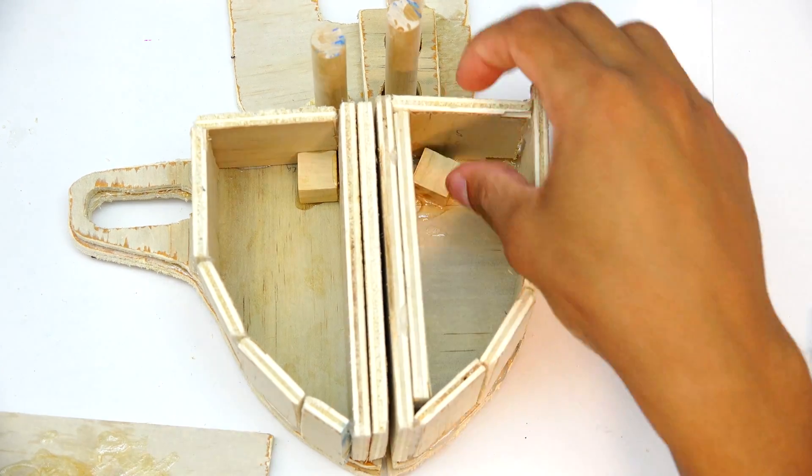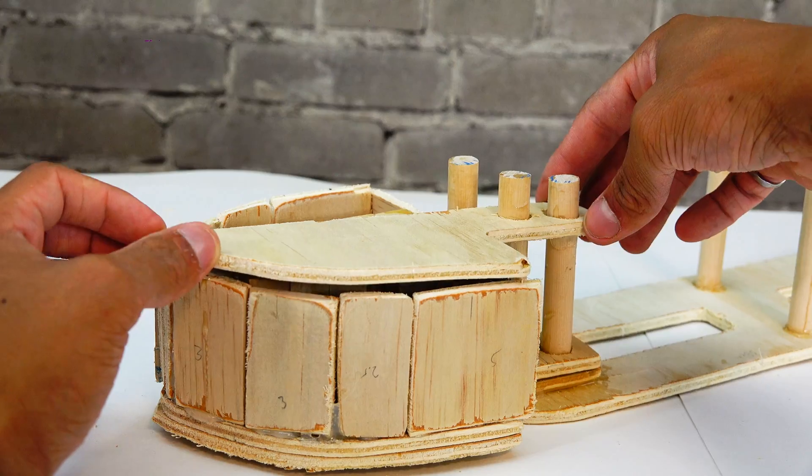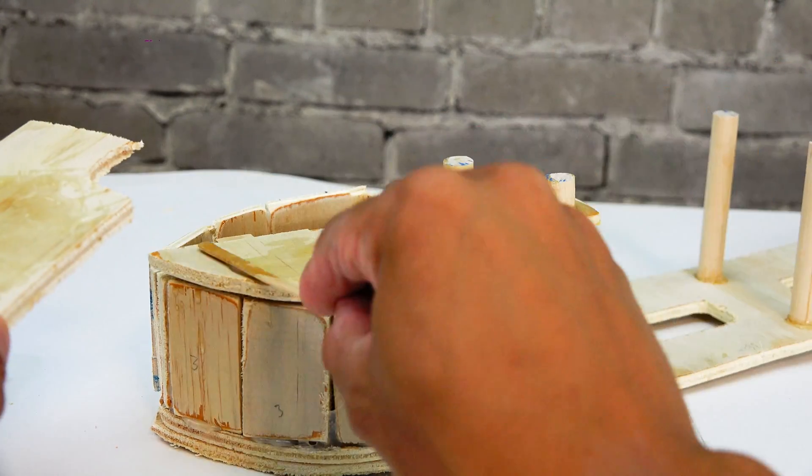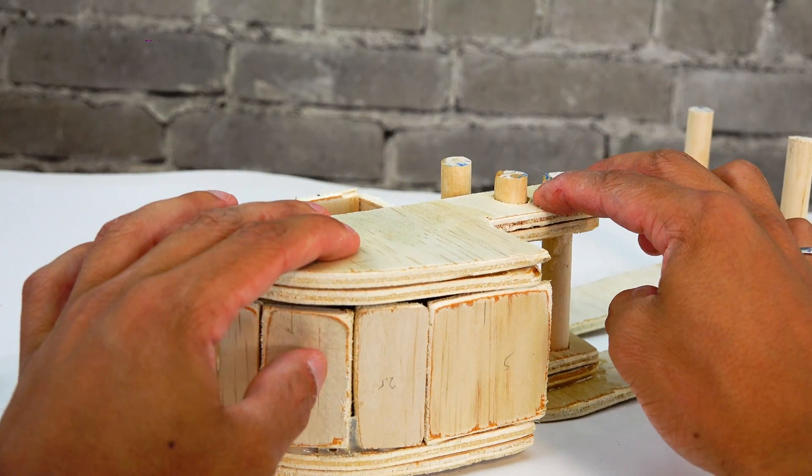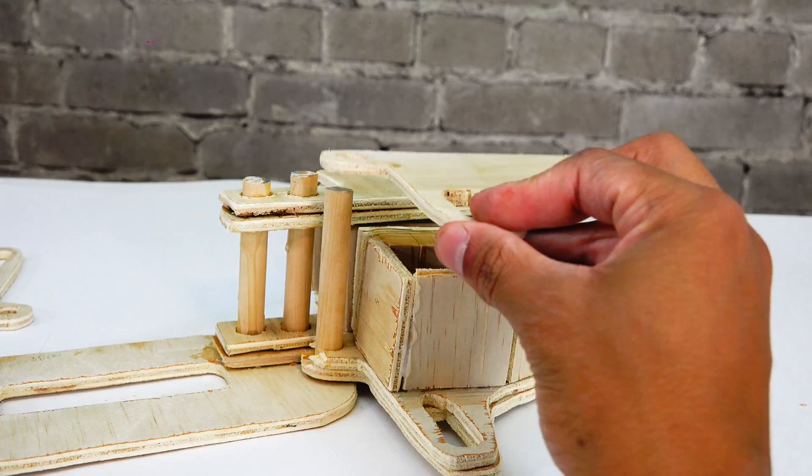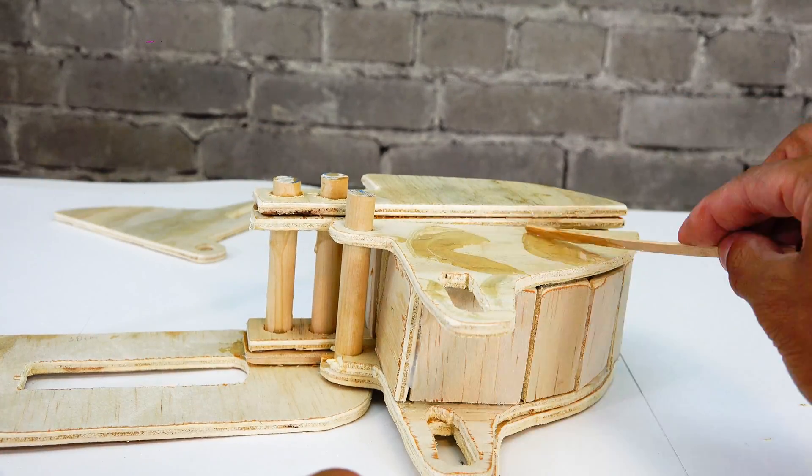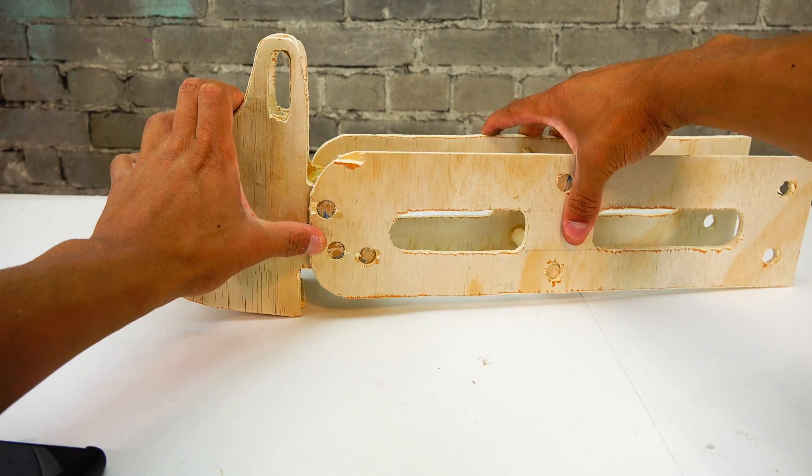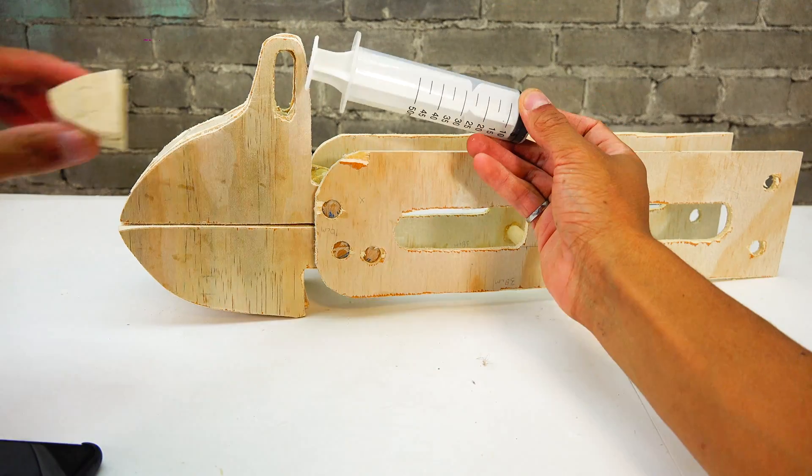I'm also going to epoxy a few wooden blocks under both sides of it just to add some strength and then we can seal it all off with another sheet of the plywood. And now we can put the other side on and see how it works. As you can see that rotates very nicely.